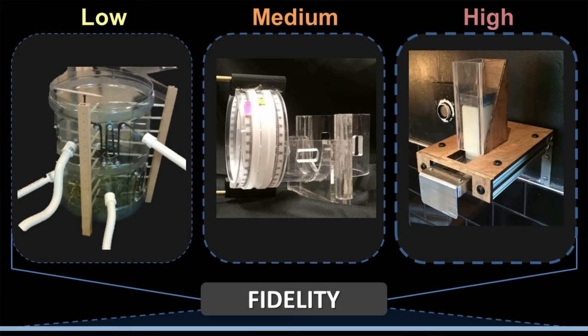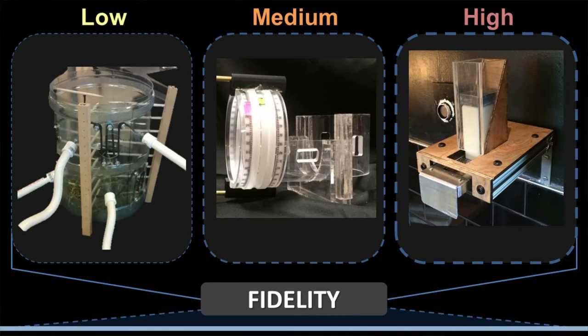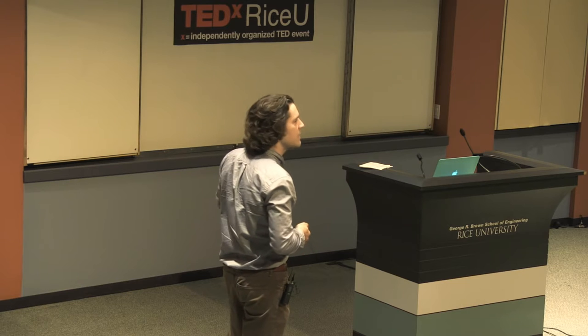Here are examples of prototypes our student teams created. On the left is a low-fidelity prototype of the giraffe feeder — notice the number of pieces and their general quality: elastic bands, a cut-up water cooler, some wood, some PVC. In the medium-fidelity column, we have a piece created with a laser cutter — cleaner edges, it looks intentional. And the high-fidelity prototype on the right has very clean lines, looks almost like a manufactured product, with aesthetic touches like a nice diagonal line.